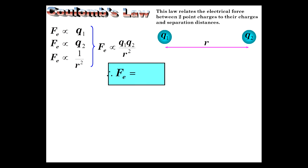To make a proportionality an equality, you know that we need to put a constant in front of it, so I just did that. And we now have Coulomb's Law.